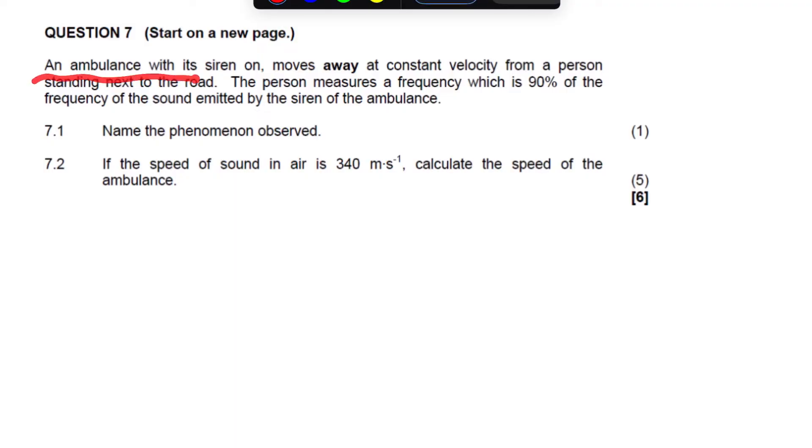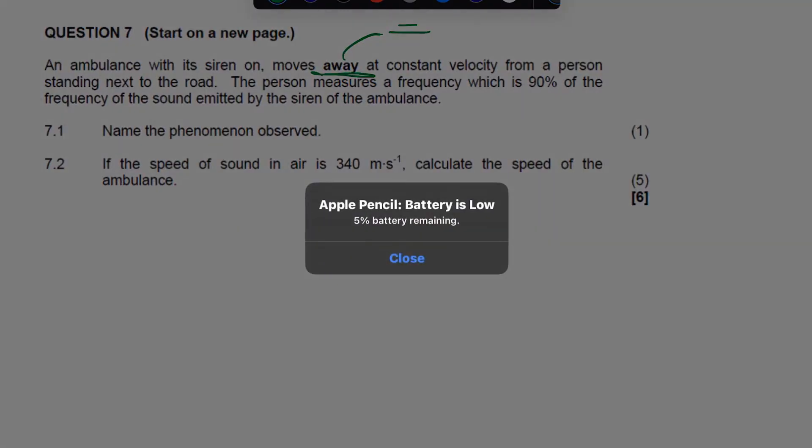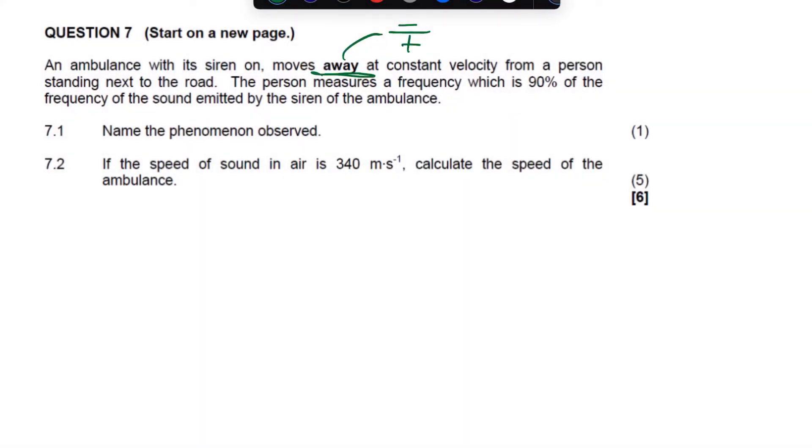It says here, an ambulance with a siren on moves away, it's very important, at a constant velocity from a person standing next to the road. So, it moves away, very important. We know our way is going to be minus divided by plus.